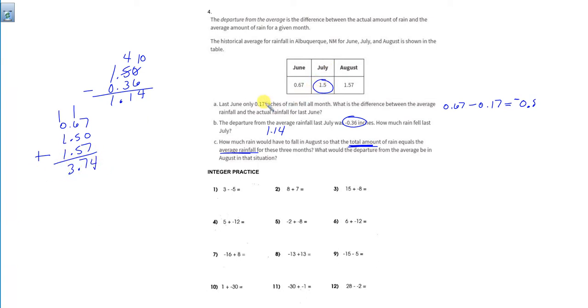But so far, they've only gotten 0.17 and 1.14. So right now, they're kind of below average, because they're only sitting on 1.3 inches. We're good ways away from being to that point. So how much rain would have to fall in August to get there? What could we add to that to get 3.74?